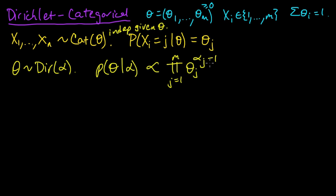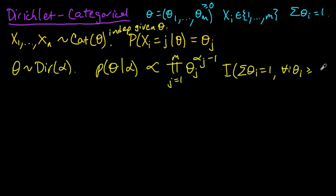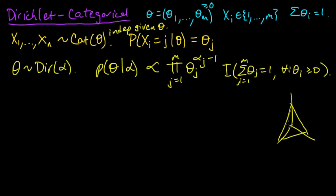We also include the indicator function that theta satisfies the required conditions: the sum of the thetas equals 1 and all entries are greater or equal to 0, for j from 1 to m. This says that the support of this distribution is the probability simplex — we can draw it in three dimensions as a triangle with vertices theta_1, theta_2, theta_3.